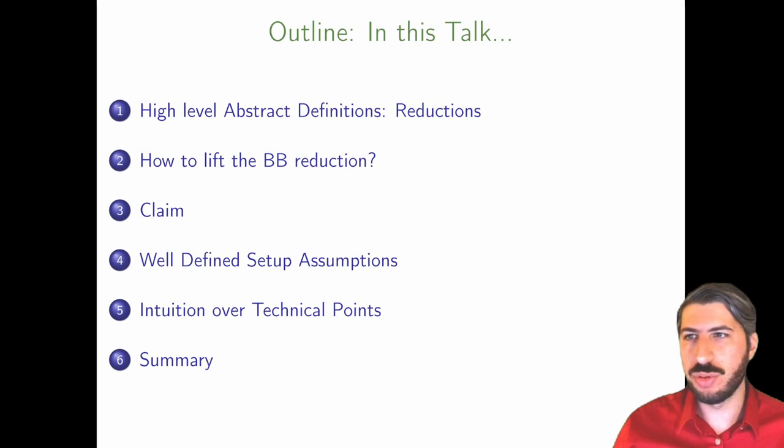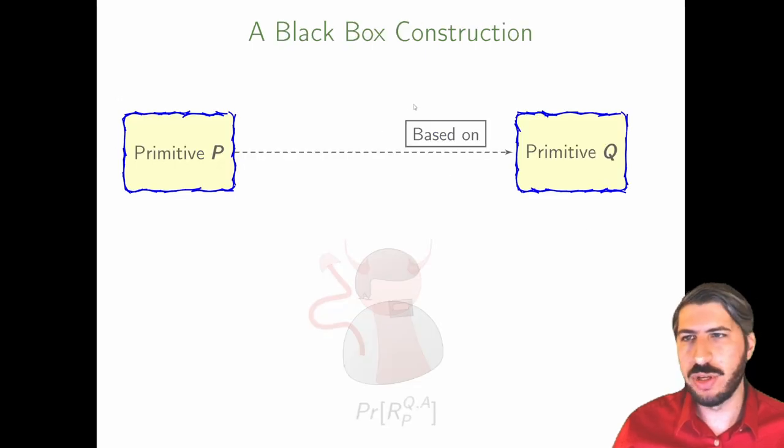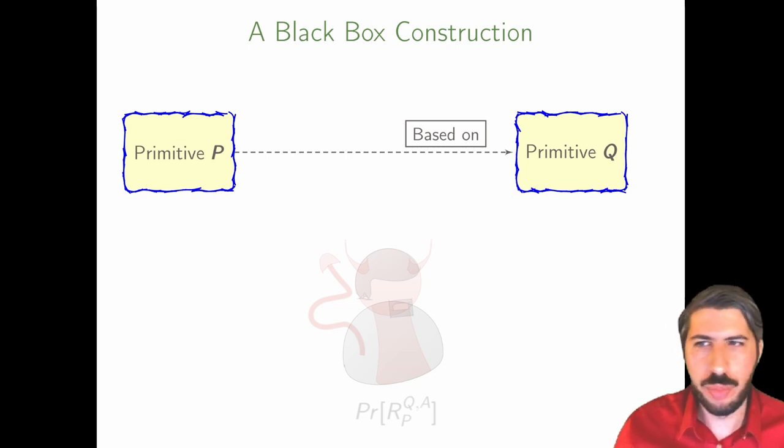Let us move to black box reductions. Let there be two primitives, P and Q. We seek to show that no adversary of some kind, let's say probabilistic polynomial time, can break P. And normally we assume that the adversary cannot break Q.